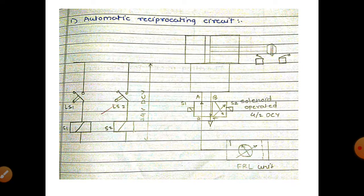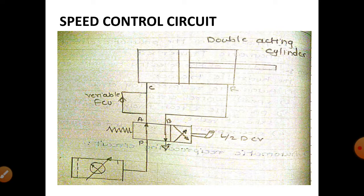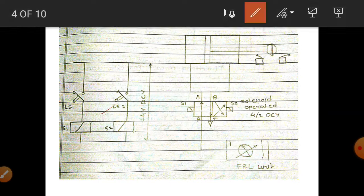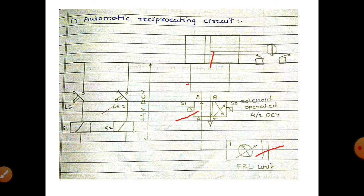This is the circuit diagram of the automatic reciprocating circuit. The basic components are: the FRL unit (filter, regulator, lubricator), a 4x2 directional control valve, and the control mechanism is a solenoid coil — this type of valve is known as a solenoid operated directional control valve. Also shown are the suction lines and the actuator. This complete circuit is the automatic reciprocating circuit.